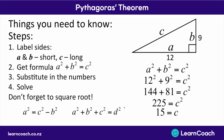Alternatively, if you have 3D problems, you go short side squared plus the next short side squared plus the third short side squared, and that's going to give you your diagonal.